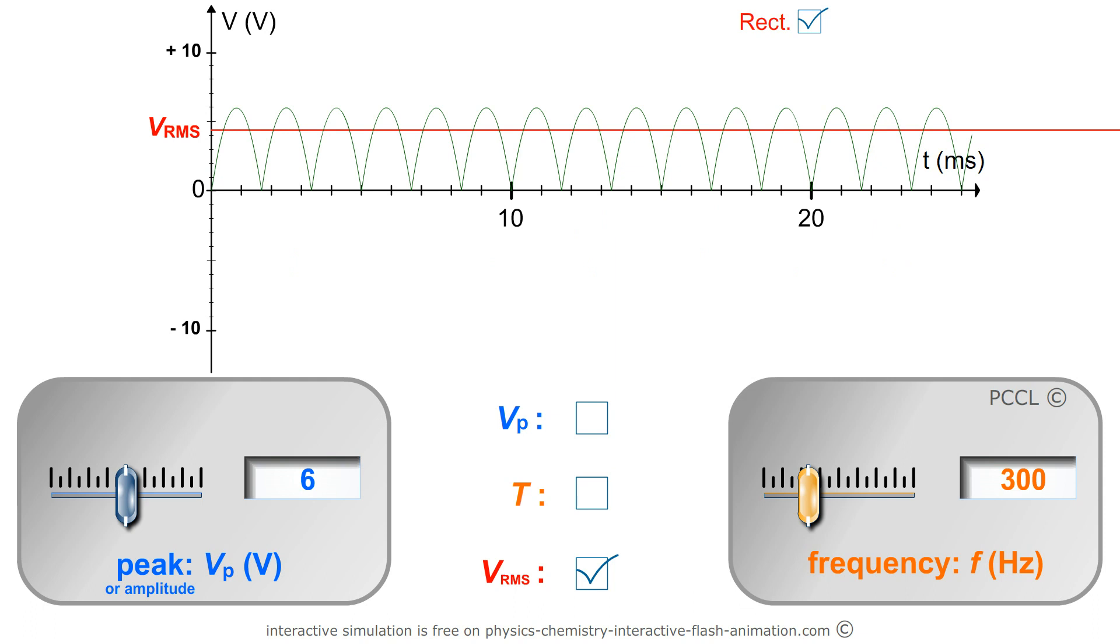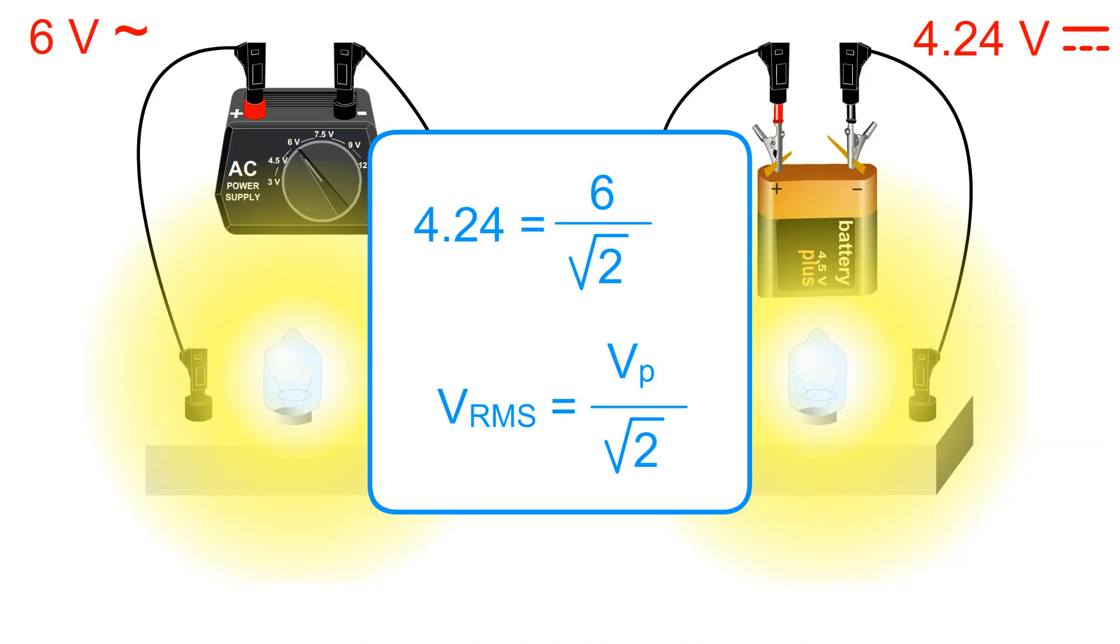Remember that this voltage is sinusoidal. In the case of sinusoidal voltages, RMS is V peak divided by square root of 2.